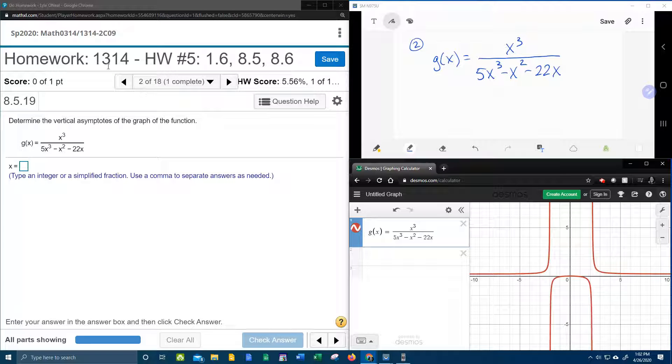Here we go, question number 2 in our college algebra homework number 5 in MyLabMath wants us to determine the vertical asymptotes of the graph of this function.